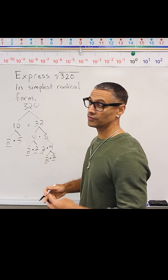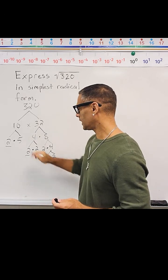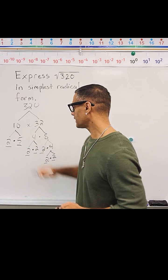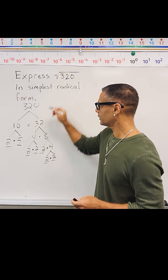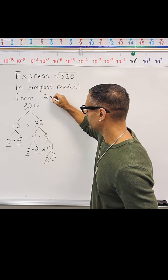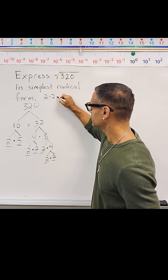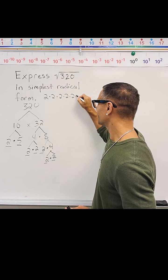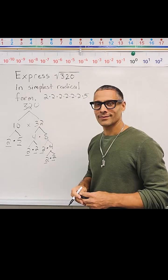2 is the only even prime number. And we also have the prime number 5. So what I'm going to do is rewrite this in expanded form: 2 times 2 times 2 times 2 times 2 times 2 times 5.